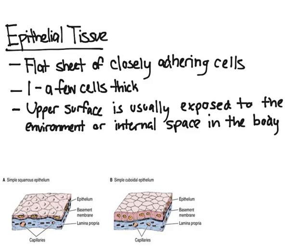In this video, I'm going to talk about one of the types of tissue, which is epithelial tissue. Epithelial tissue is essentially a flat sheet of closely adhering cells. The cells are very tightly packed together, and the thickness is usually one to a few cells thick.